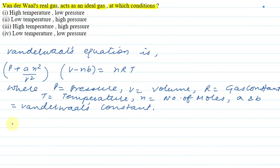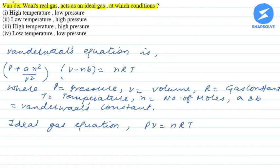Now, let's talk about the ideal gas equation. The ideal gas equation is PV equals nRT.